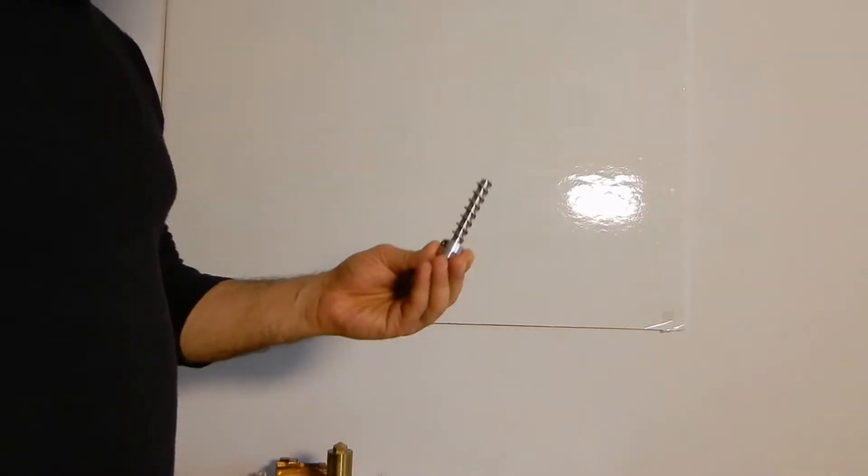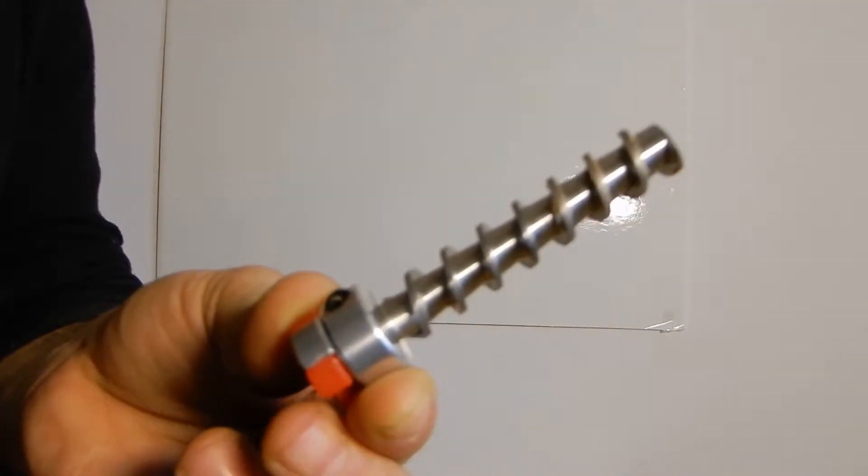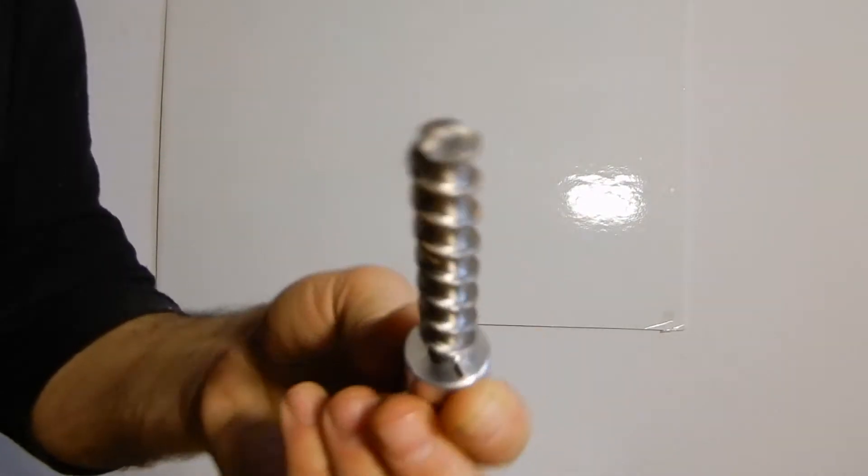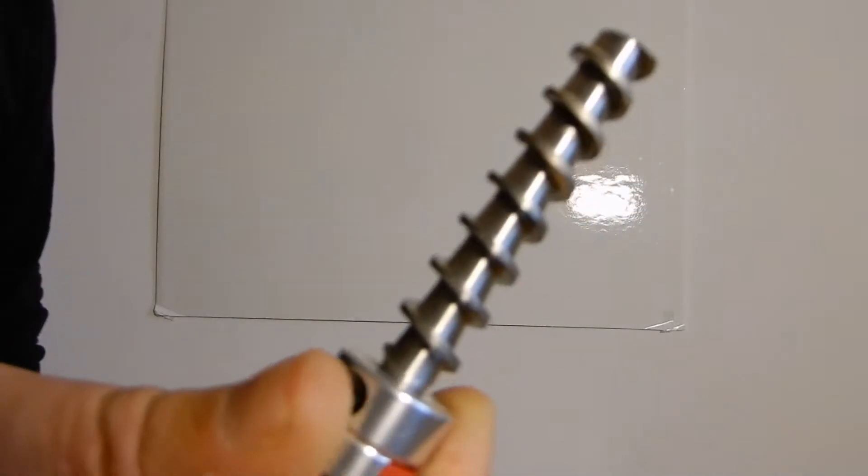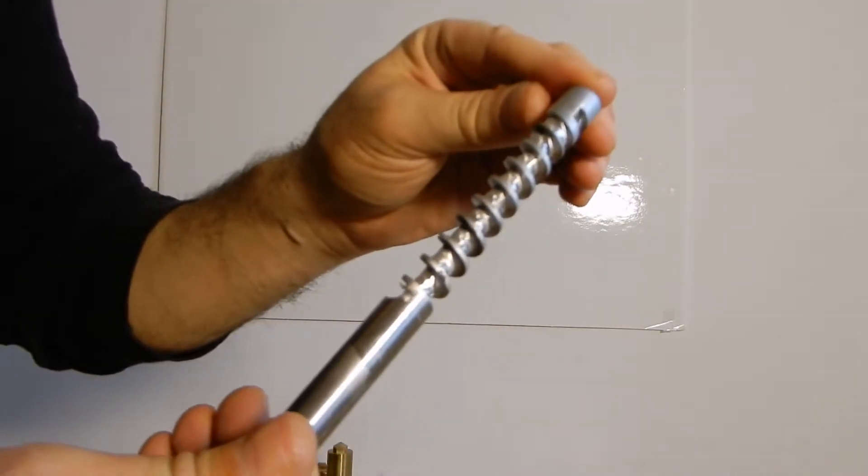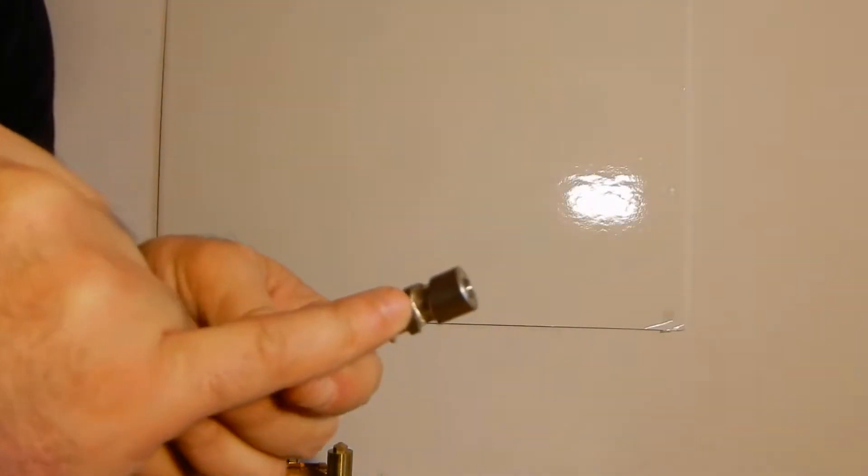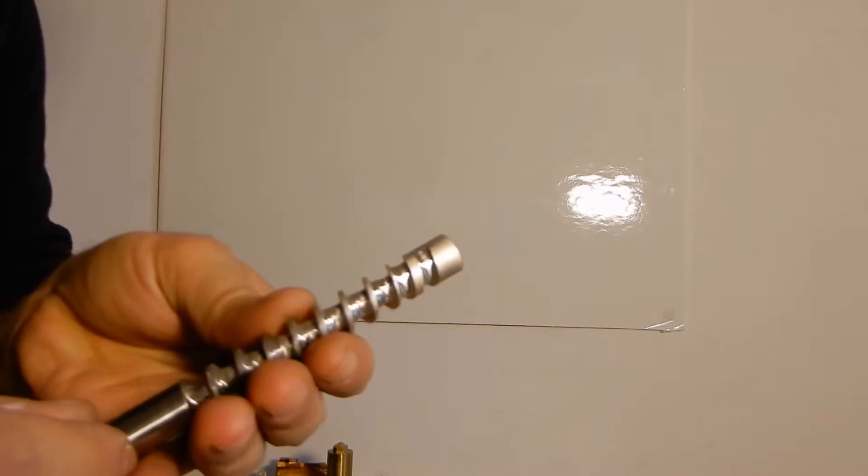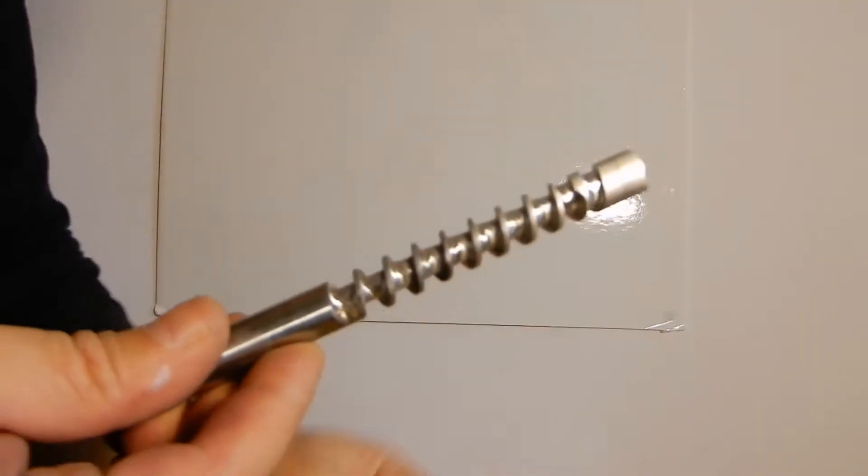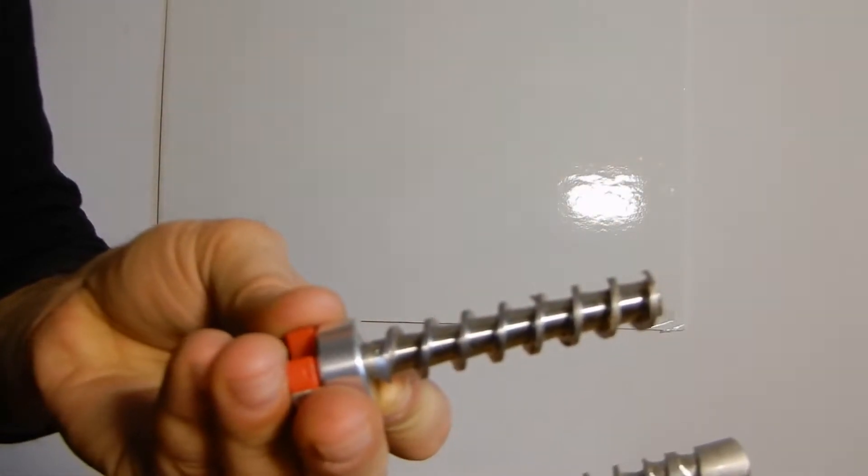I promised on the last video that I will show you the final product. This is the final screw after it was cut off and machined. This is my first one that I was trying to cut, but here I got some imperfections so I decided to redo it. This was the second one I cut and polished, so it looks quite good.